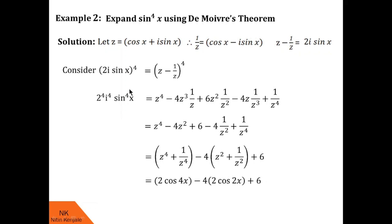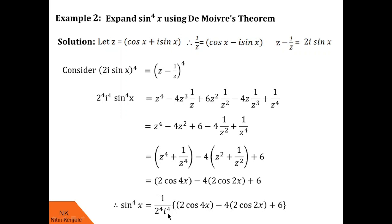Finally, to get the expansion of sin raised to 4x, we take 2 raised to 4 and i raised to 4 to the other side. We get sin raised to 4x equal to 1 upon 2 raised to 4 times i raised to 4, times 2 cos 4x minus 8 cos 2x plus 6. You can then replace i raised to 4 with its value, which is 1. I hope you understood how to expand functions of the type sin raised to nx.